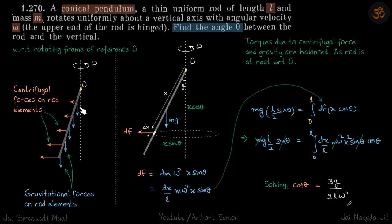Because the gravitational force is uniform everywhere we can replace that whole force with mg at the center of mass. The centrifugal force we cannot do that because it's varying as you go along the rod, so we need to integrate to find the net torque due to centrifugal forces.